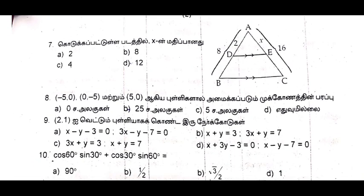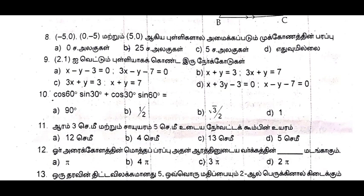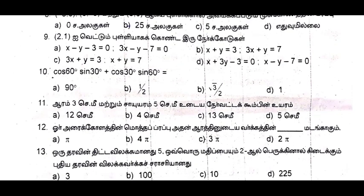The 8th one is B option — 25 square units. The 9th one is B option — x plus y is equal to 3, 3x plus y is equal to 7. The 10th one is D option.